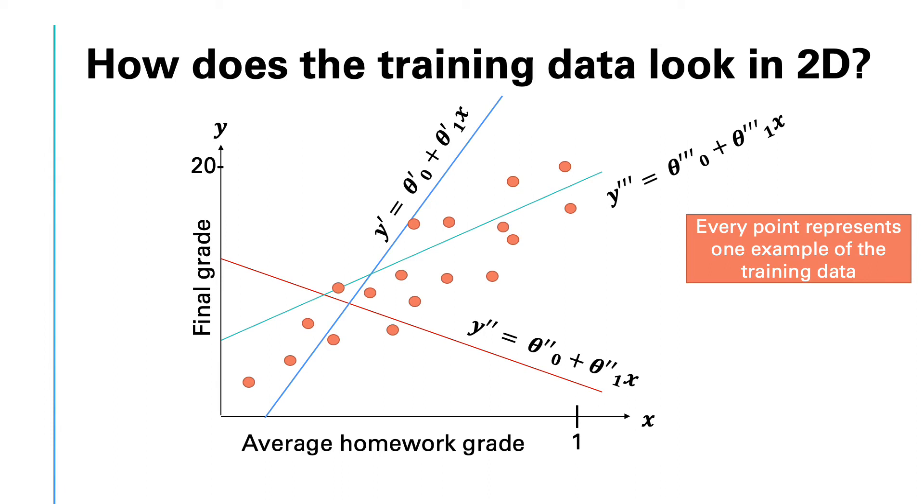Now, if you look at the training data, each point represents the pair average homework grade on the x-axis and the final grade on the y-axis. Maybe the range of the homework grades is from 0 to 1 and the final exam from 0 to 20. There are many tunable functions that can be represented using different coefficients. The question is which one is the best to fit the training data?